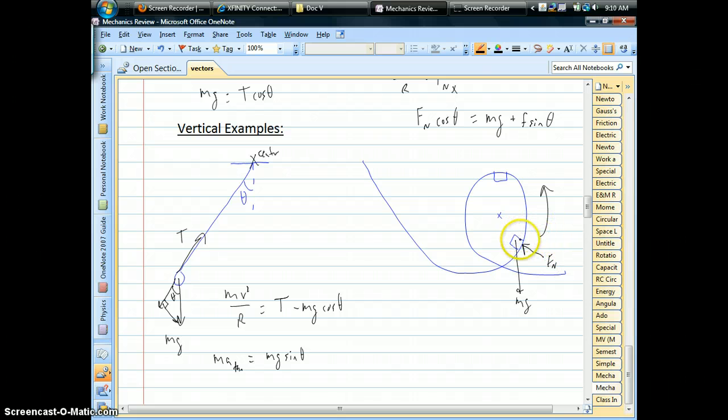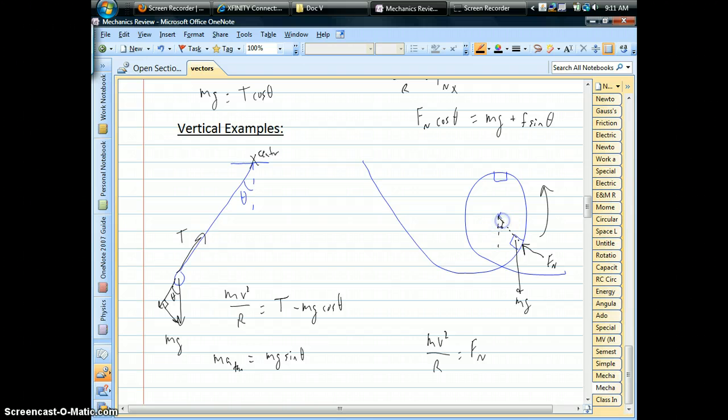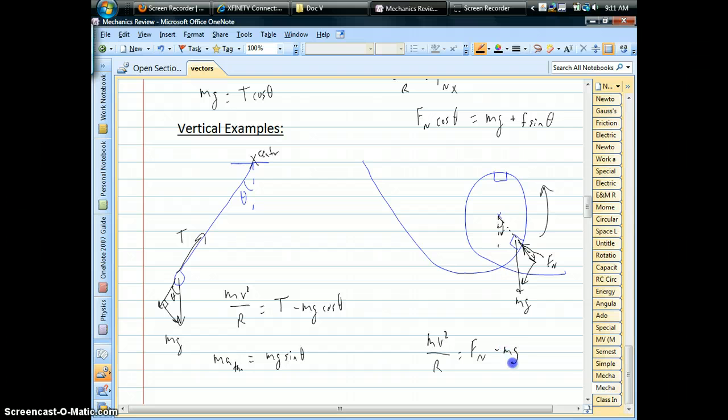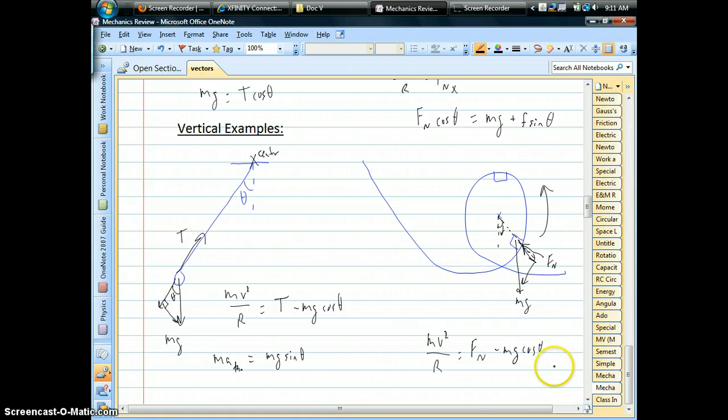So here's a case where the normal force points towards the center of the loop. That's the centripetal force. And you have part of gravity pointing downward away from the center. So again, if we're measuring angles with respect to the vertical, like we tend to do, and we can break gravity up into two pieces, we're going to have mg cosine theta in this case pointing away from the center of the circle. That's centrifugal force.